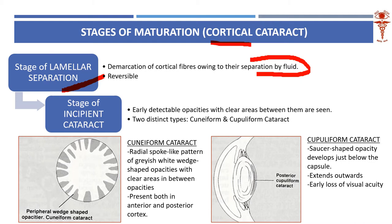Then subsequently we come to the stage of incipient cataract. Incipient cataract is early detectable opacities. You dilate the eye very nicely and look under slit lamp — you fine focus the lens and see it under slit lamp. Then you will see two distinct types: cuneiform and cupuliform.